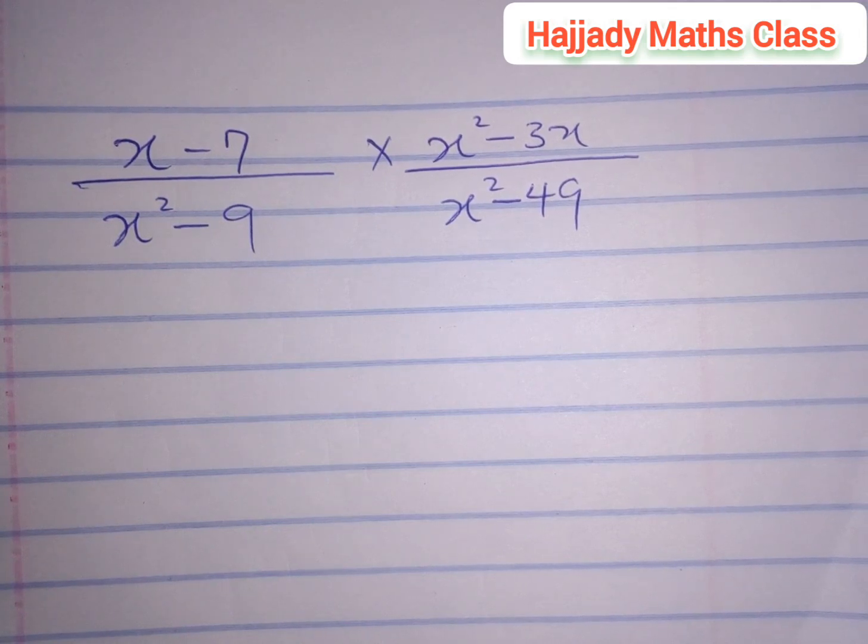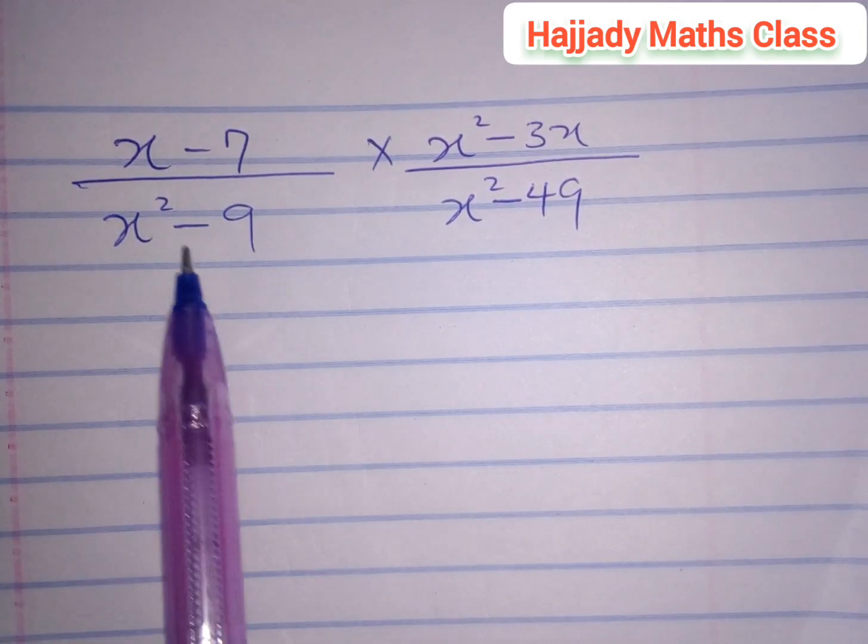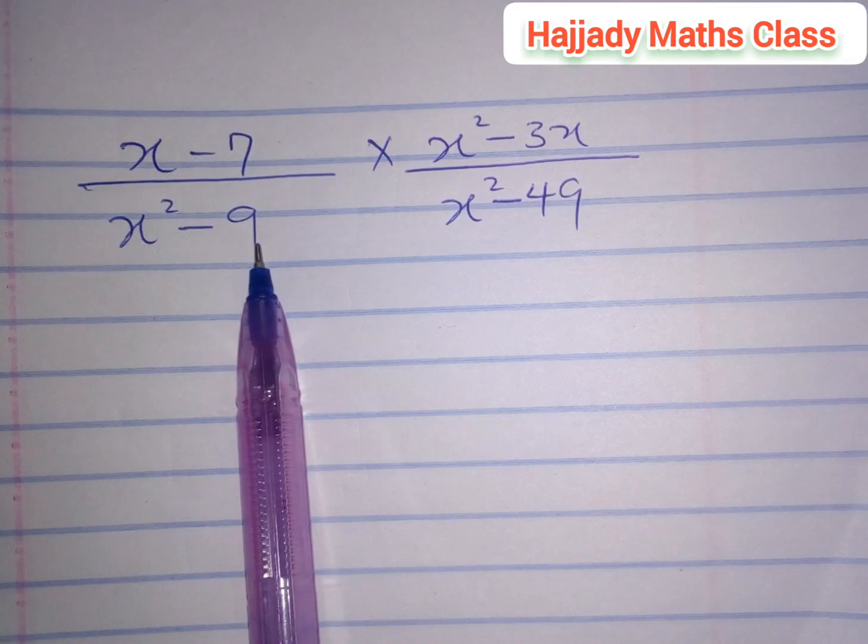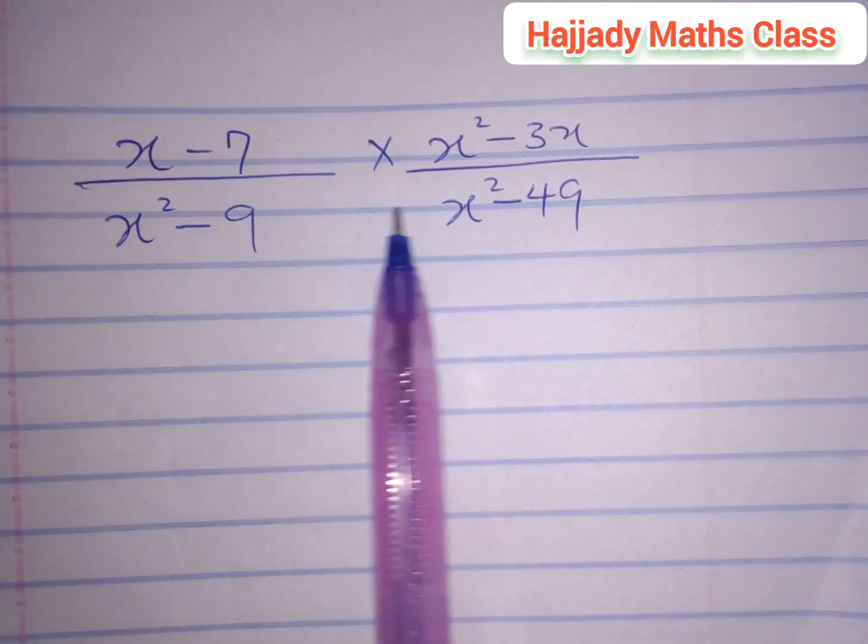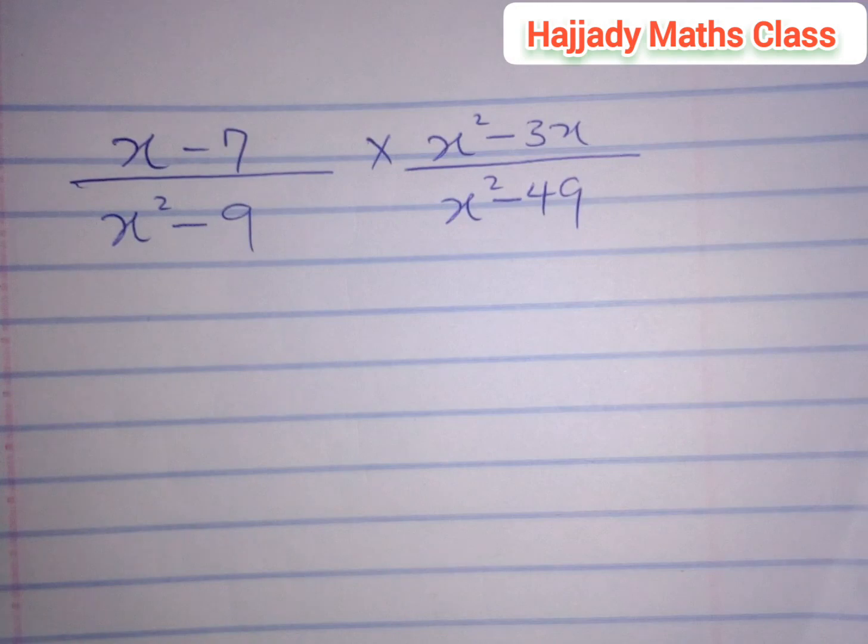Now, we have a clue here. This is a perfect square, and this is a perfect square. So the difference of two squares can be applied to the denominators.